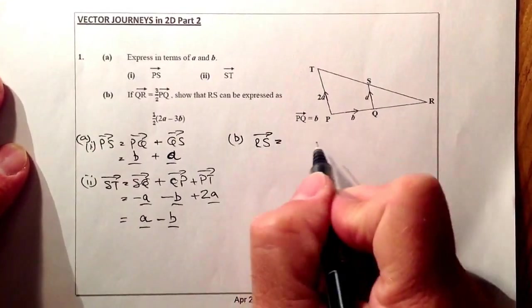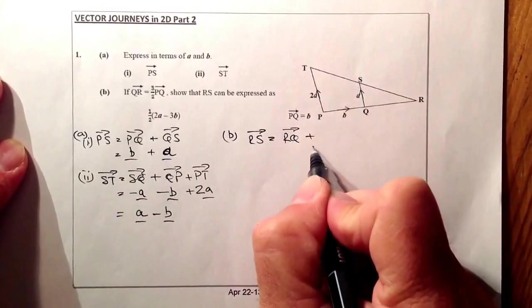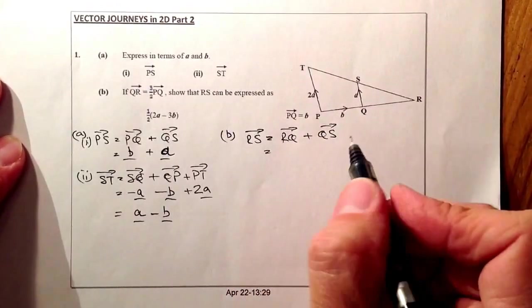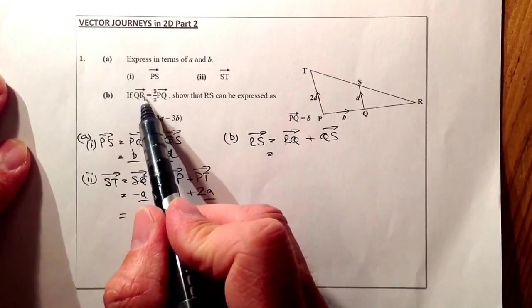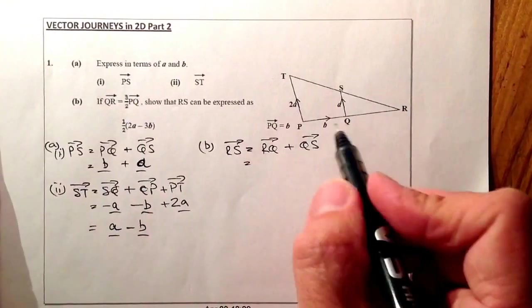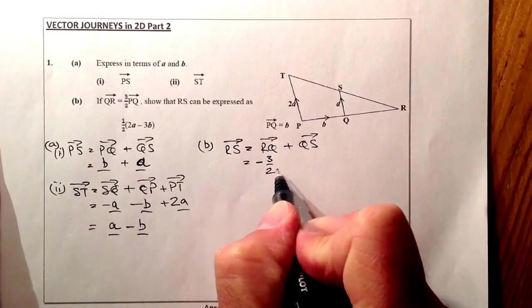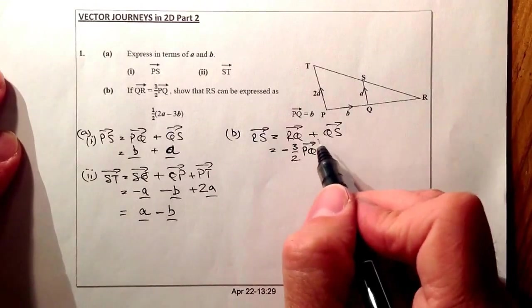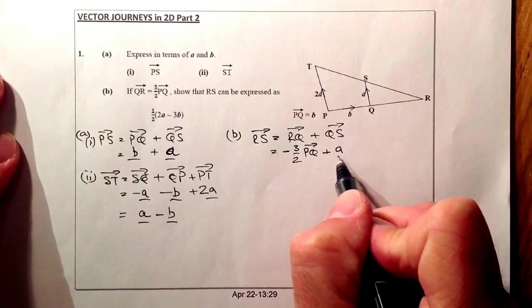Okay, so the route I'm going to take is I'm going to go from R to Q first of all as a vector, and then I'm going to add on the Q to S. RQ is in the opposite direction of this vector. So RQ would be negative 3 over 2 PQ. So let's put that in. So it would be negative 3 over 2 vector PQ, just from this information given here. And adding on to that will be the vector QS. So QS is the vector A.